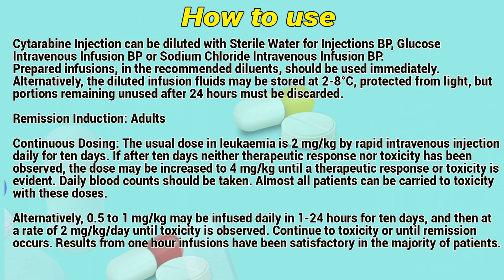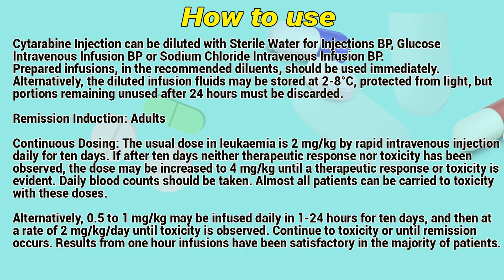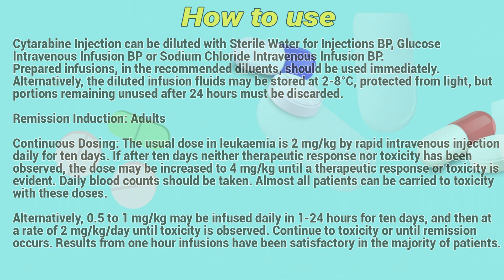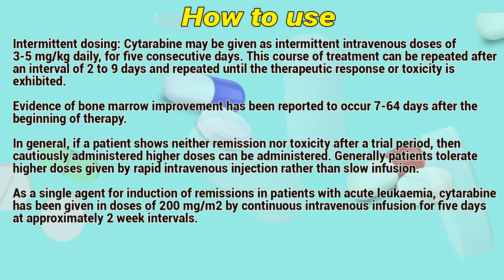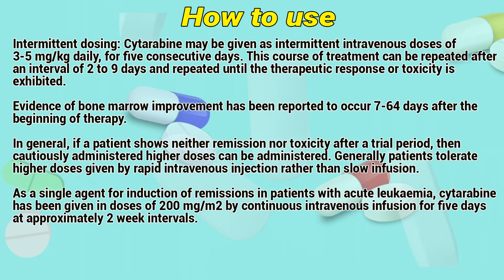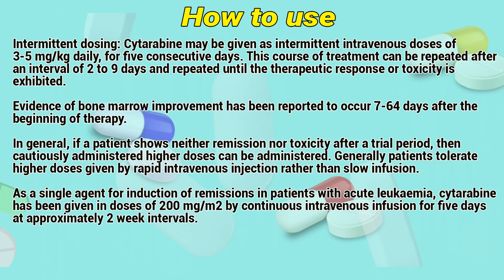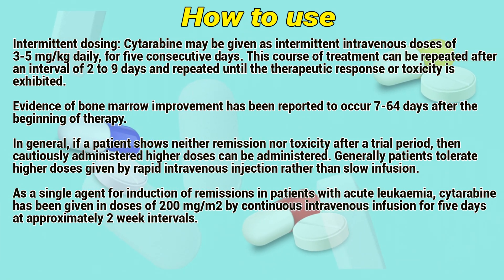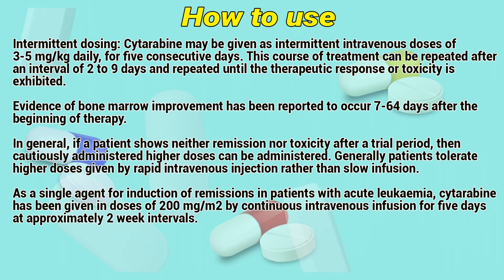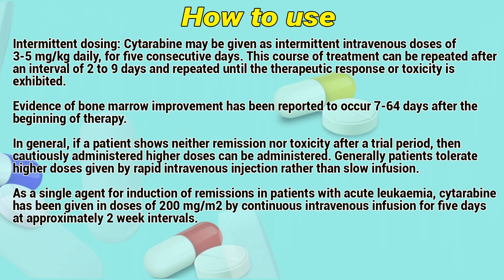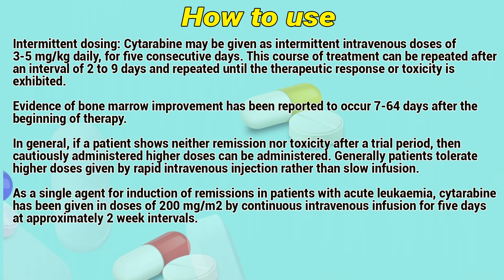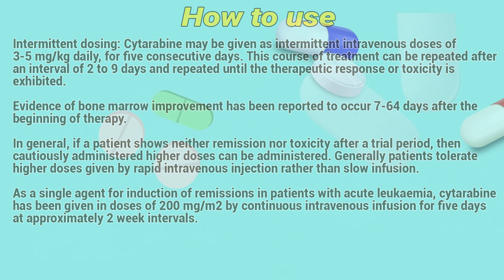Alternatively, 0.5 to 1 mg per kg may be infused daily in 1 to 24 hours for 10 days, and then at a rate of 2 mg per kg per day until toxicity is observed. Continue to toxicity or until remission occurs. Results from 1-hour infusion have been satisfactory in the majority of patients. Intermittent dosing: Cytarabine may be given as intermittent intravenous doses of 3 to 5 mg per kg daily for 5 consecutive days. The course of treatment can be repeated after an interval of 2 to 9 days, and repeated until a therapeutic response or toxicity is exhibited. Evidence of bone marrow improvement has been reported to occur 7 to 64 days after the beginning of therapy. In general, if a patient shows no remission or toxicity after a trial period, higher doses can be administered. Patients generally tolerate high doses given by rapid intravenous injection rather than slow infusion. As a single agent for induction of remission in patients with acute leukemia, Cytarabine has been given in doses of 200 mg per m² by continuous intravenous infusion for 5 days at approximately 2-week intervals.